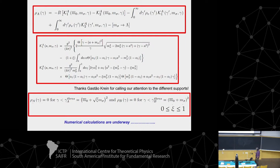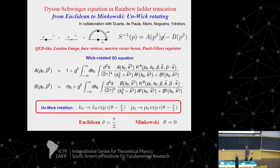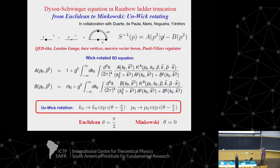This is what we are doing now, and numerical calculations are underway. The idea is that once we have the Minkowski solution, we can explore the complex plane for those self-energies. For the same model, we could rotate back from Euclidean to the Minkowski direction — this was the suggestion by Peter Maelis, who already did that. In this case, Euclidean is pi over two and Minkowski is theta equals zero, and we compute the solution as a function of theta.